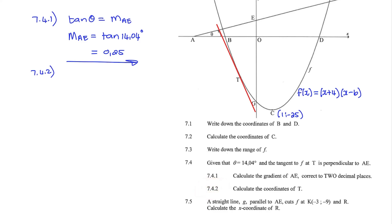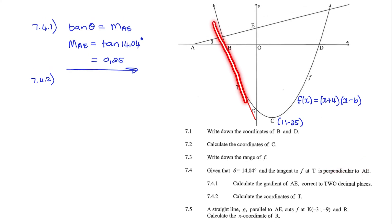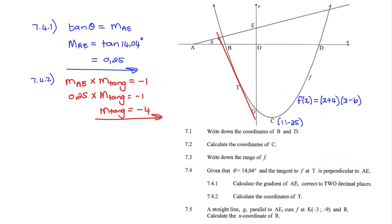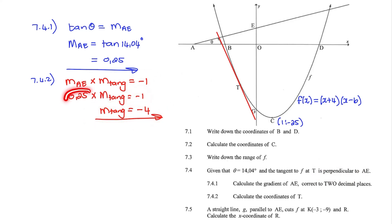Question 7.4.2: Calculate the coordinates of T. We are given that the tangent to f at point T is perpendicular to line AE. If we draw a tangent line to the parabola, that tangent line would be perpendicular to line AE. We know the gradient of line AE is one quarter (0.25). Multiplying that with the gradient of the tangent line equals negative 1, because the product of perpendicular gradients equals negative 1. This gives the gradient of the tangent as negative 1 divided by 0.25, which equals negative 4.